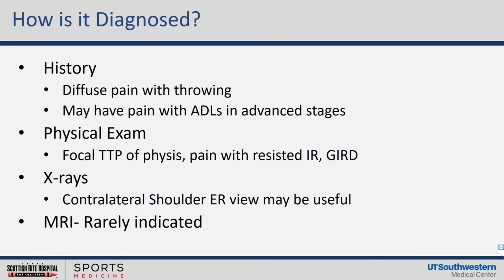I'll often block the back of their shoulder with one hand and then have them try to internally rotate against me, and that will reproduce their pain. These kids often have glenohumeral internal rotation deficiency, where the back of the shoulder gets tight with throwing, leading to limited internal rotation — that's highly associated with Little Leaguer's Shoulder Syndrome. When you do get x-rays, if the diagnosis is in question, contralateral films are sometimes useful, and usually just a single shoulder external rotation view is helpful. MRI is rarely ever indicated.